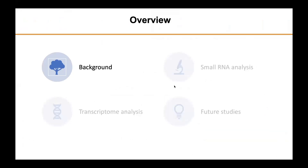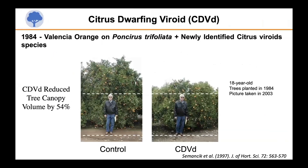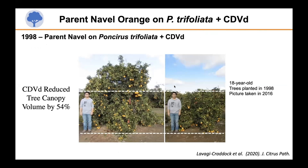First, let me give you some background on citrus dwarfine viroid and its potential applications. This project began when Professor Semanchik, then at the University of California in Riverside, decided to work with the then newly identified citrus viroids. He planted Valencia trees, inoculated them with citrus dwarfine viroid, and found an impressive canopy volume reduction — as you can see in this picture — even 20 years after planting. Semanchik then continued his work and inoculated navel trees with citrus dwarfine viroid, which were also dwarfed.